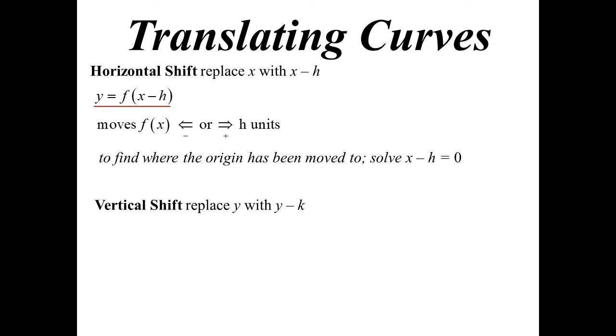Vertical shift, but now it's grouped with the y, because vertical, it's the range that's being affected. So y minus k. So it's y minus k equals function x. It's grouped with the y. You don't normally see it like that, of course.